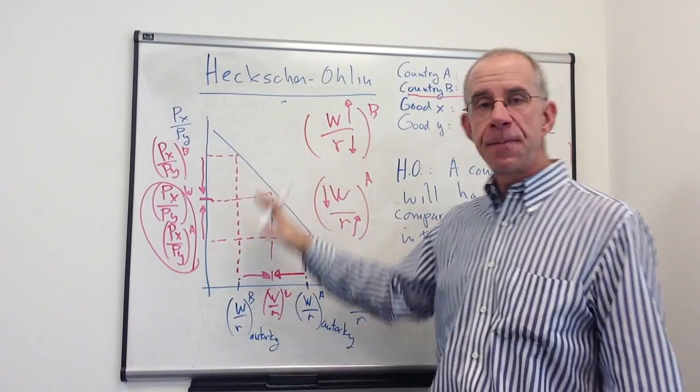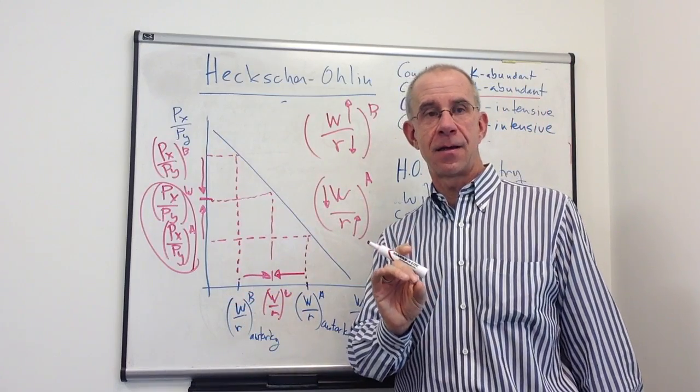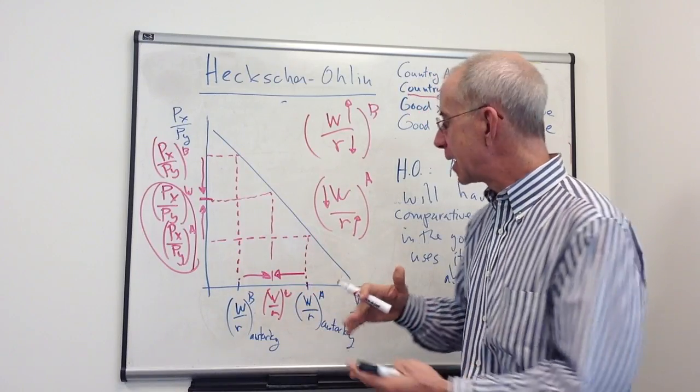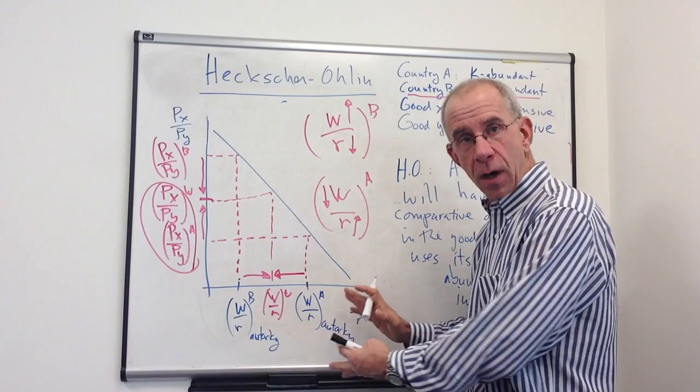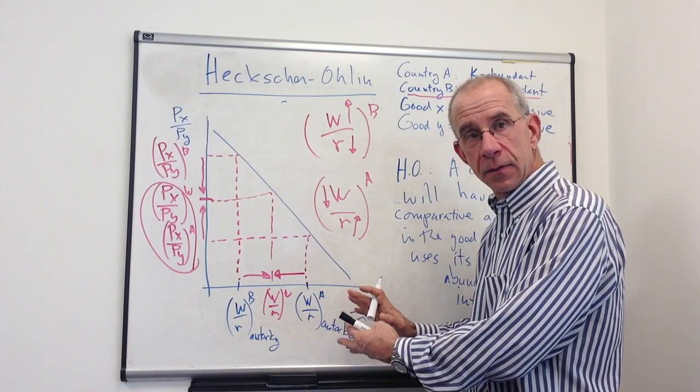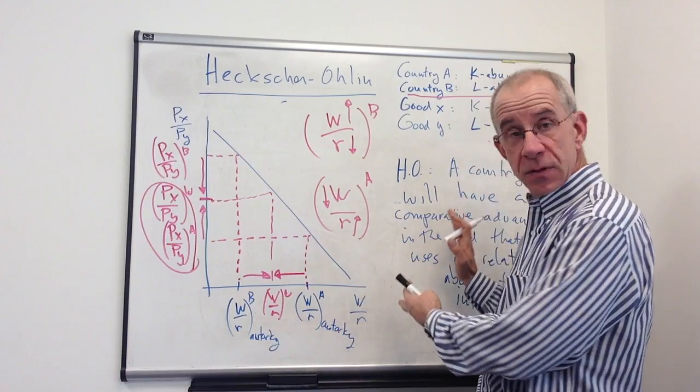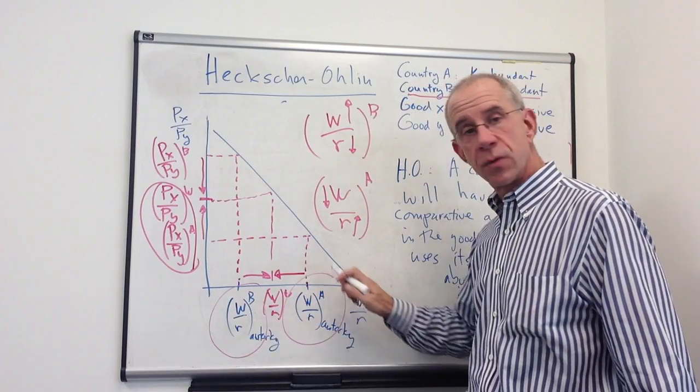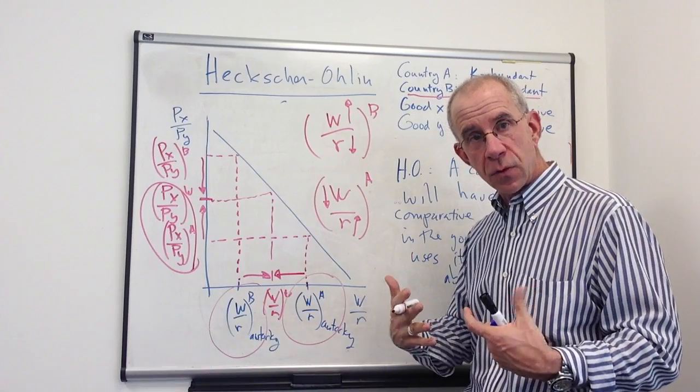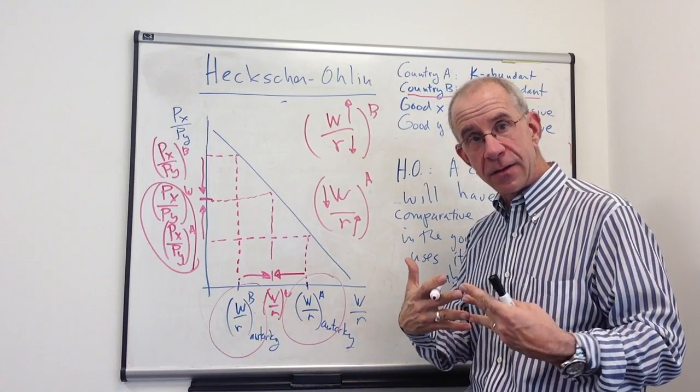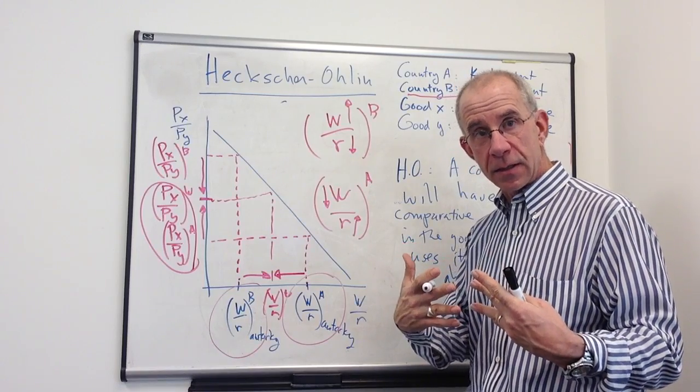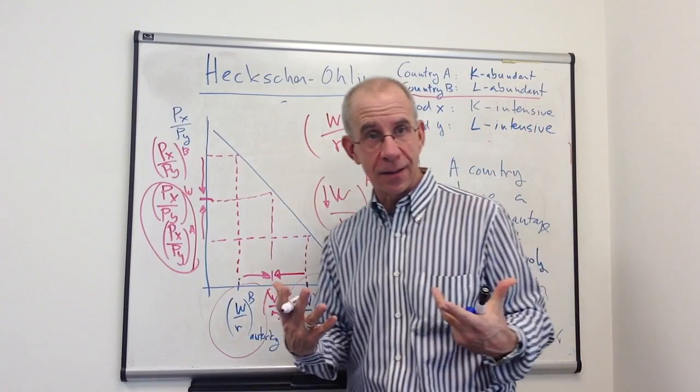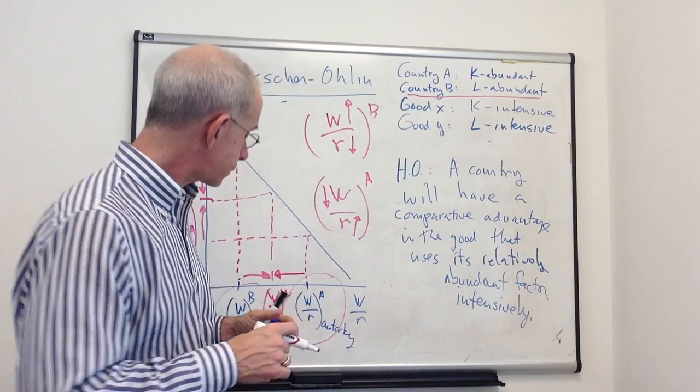So this depiction of Heckscher-Ohlin is not so much about the consumption possibilities or the PPF. Instead, it's looking at the factor market implications of Heckscher-Ohlin. The differences in the factor endowments cause differences in the original autarky wage-rental ratios. The integration of the economy through trade tends to change the wage and the rental rate in the countries as the country starts to react to the price signals from the international market.